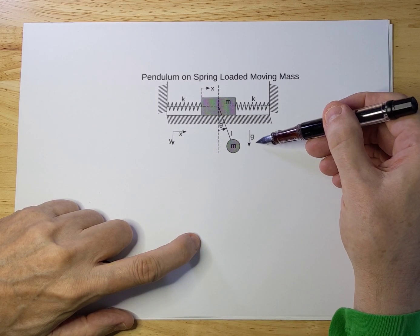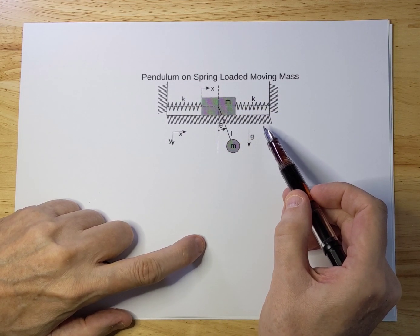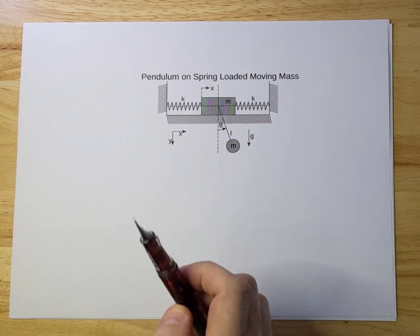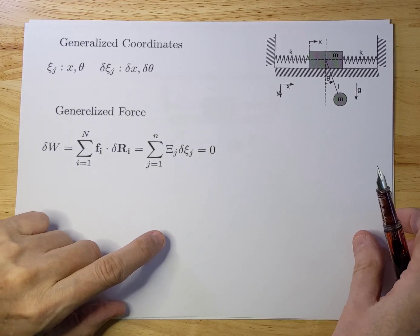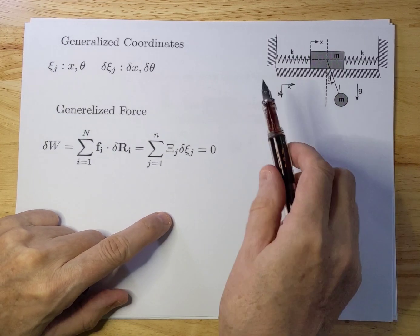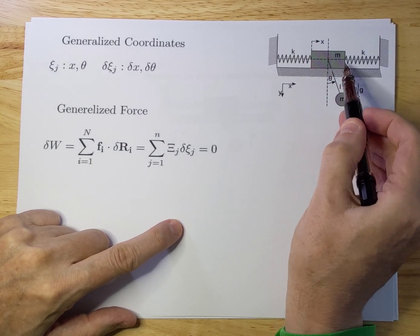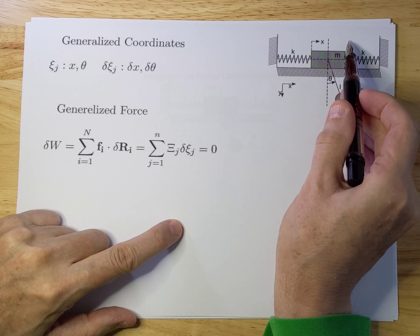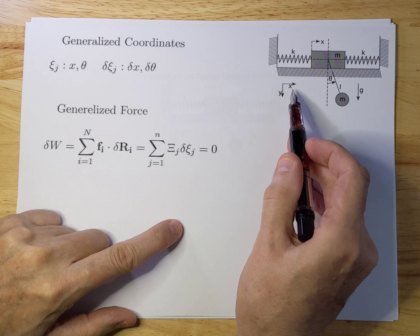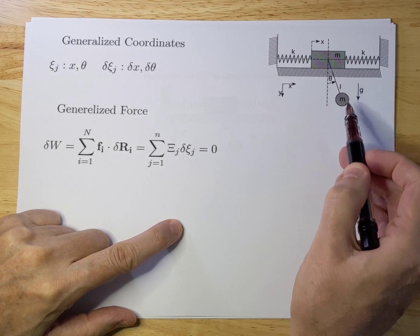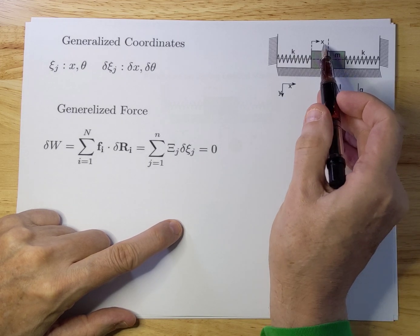Gravity is part of the equation here. What I would like to do is solve the equations of motion using the Lagrangian method. To do that, we first have to determine the generalized coordinates. In this case there are two generalized coordinates: x for the movement of the mass, where direction to the right is considered positive, and theta that moves the pendulum back and forth. So there are two generalized coordinates: theta and x.